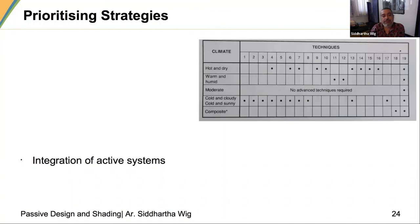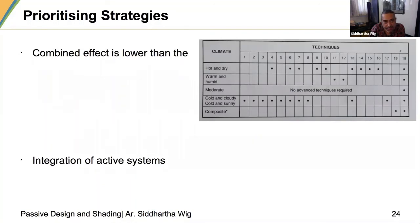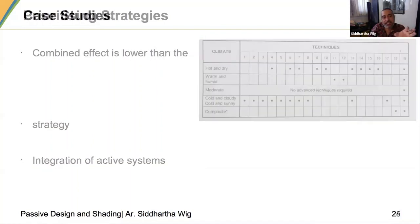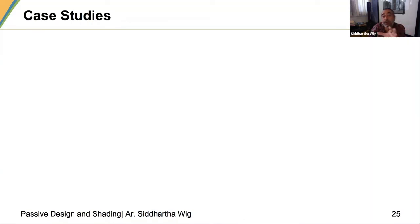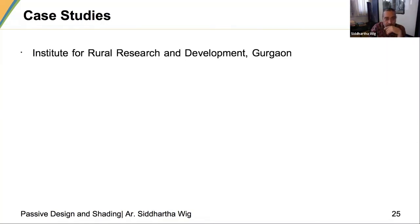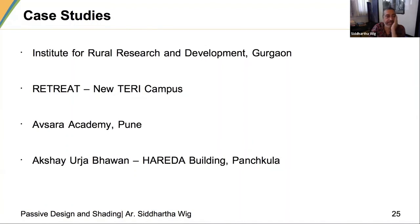You can have a variety of strategies and look at how to integrate active systems. An important note: the combined effect is often lower than the sum of the individual parts. Strategies that look very effective individually may not produce the same net effect when combined.